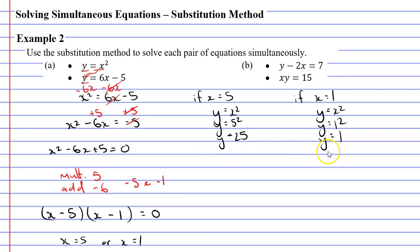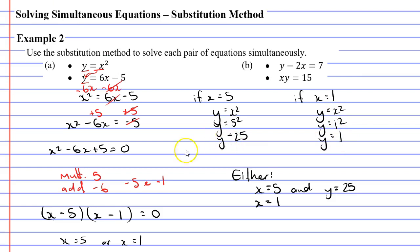I want to point out that it's important to use an "if" statement. y will only equal 25 when x is 5, and y will only equal 1 when x is 1. There is another way to write the responses: using an "either" statement. Either x equals 5 and y equals 25, or x equals 1 and y equals 1. We need the OR statement because there are two possible solutions.